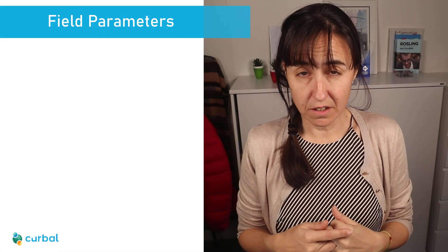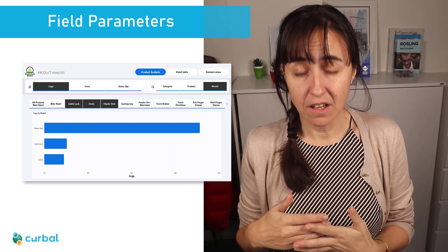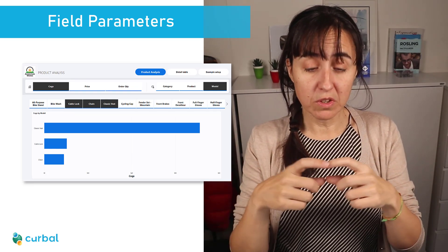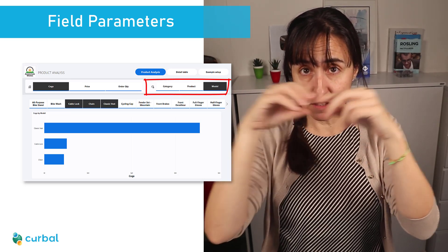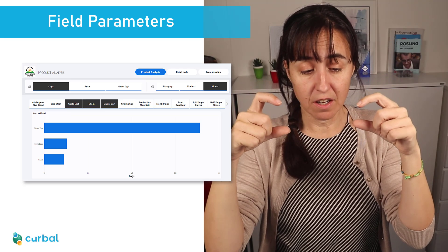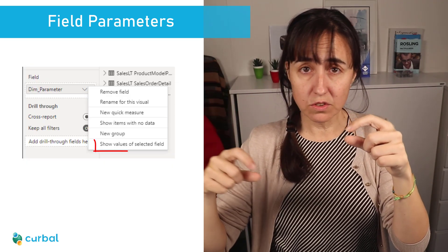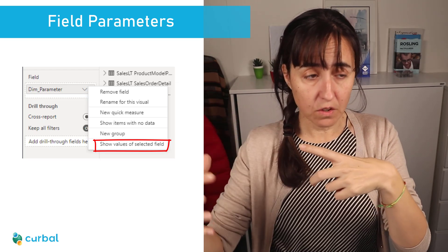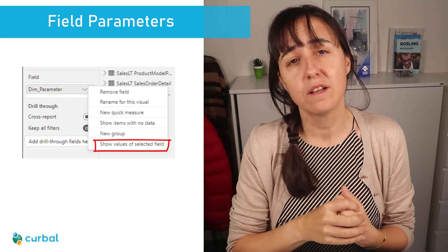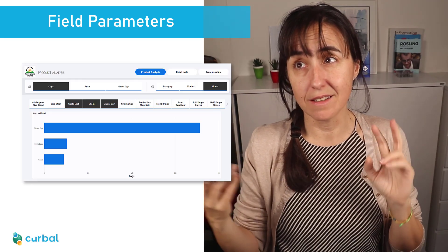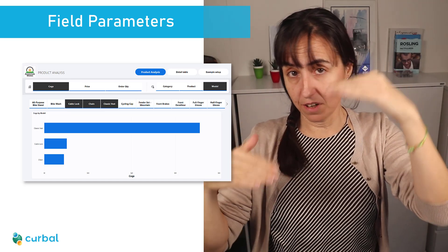Field parameters have got an update — now you can have what they call dynamic slicers. For example, you can have category, product, and model as one field parameter slicer. If you click on product, you can see product models below. You can just right-click on the field and choose 'Show values of selected field,' and then you'll be able to iterate between them. It's like a sync slicer between a hierarchy of levels.